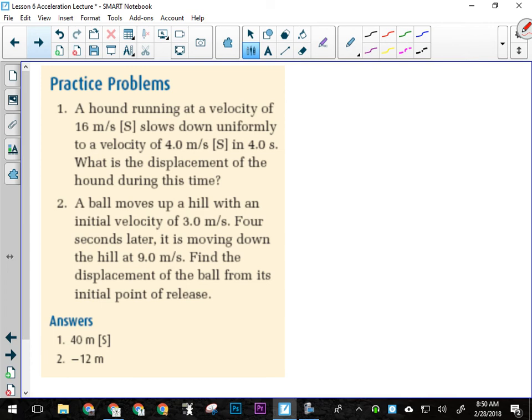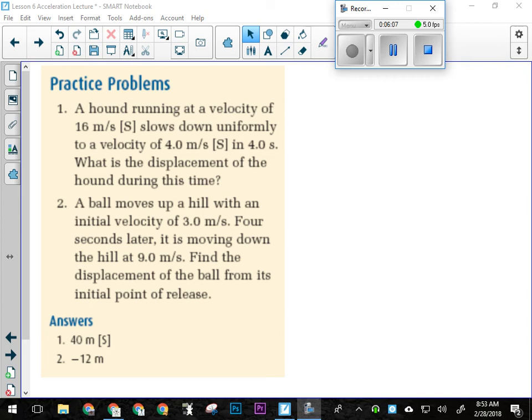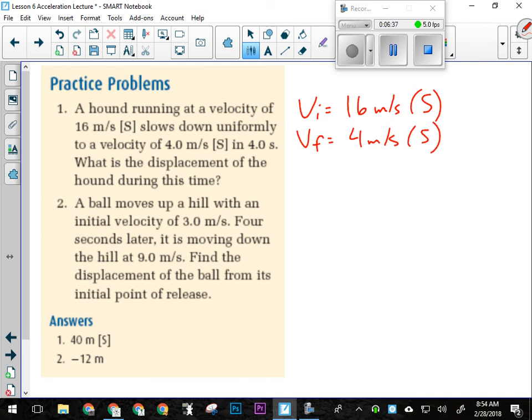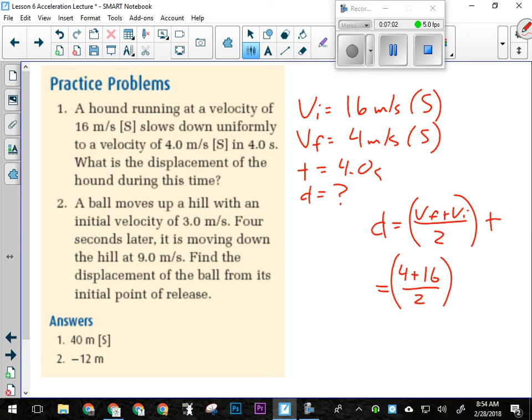Try those two. They use that formula. So for our first one here, we have a hound that's running at a velocity of 16 meters per second south. So that's going to be our VI, 16 meters per second south. They slow down uniformly to a velocity of 4 meters per second. And uniformly is important because this formula doesn't work if the acceleration isn't uniform. So VF equals 4 meters per second south. And that takes 4 seconds. We're looking for the displacement of the hound during that time.